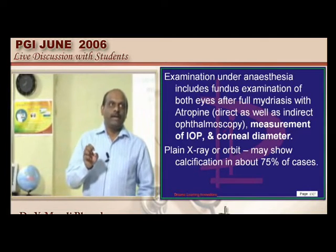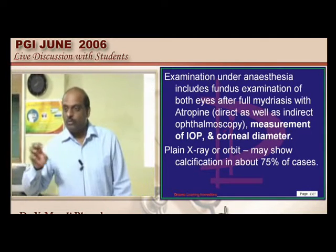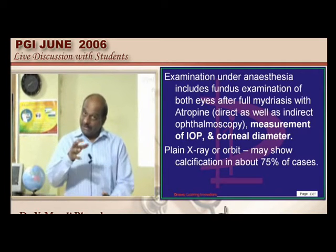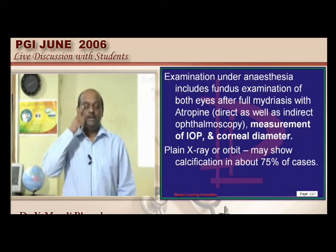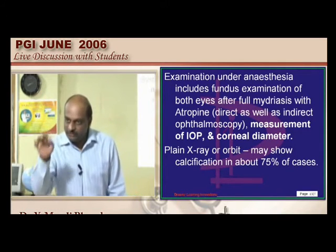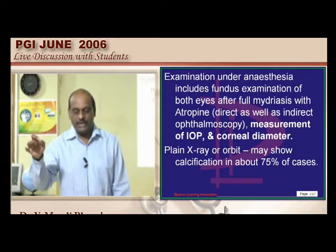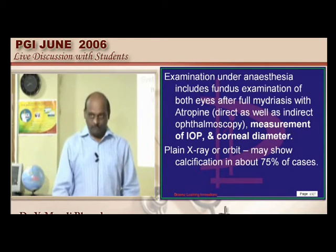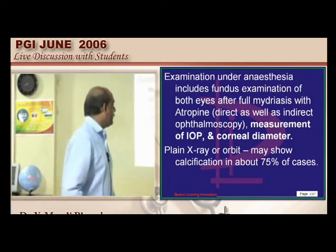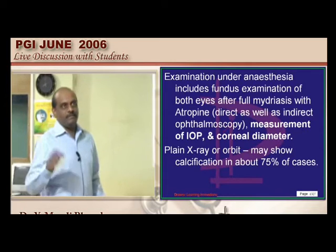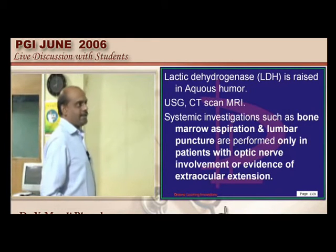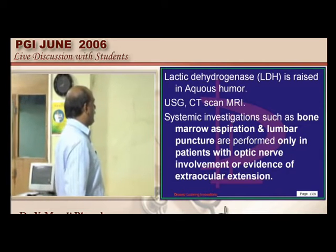There can be many causes for leukocoria, for example hyperplastic vitreous, but none of them lead to calcification. Calcification is a feature of an intraocular tumor. If calcification is showing, it is only retinoblastoma which shows calcification detectable by X-ray. You also need to do systemic investigations including lumbar puncture to detect any extraocular extension of retinoblastoma.